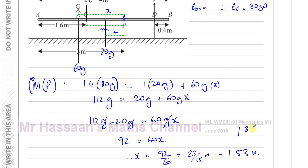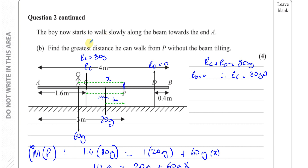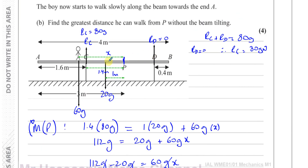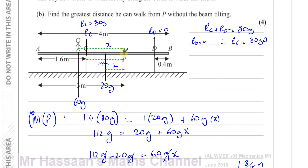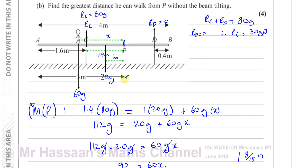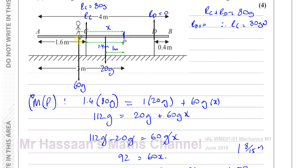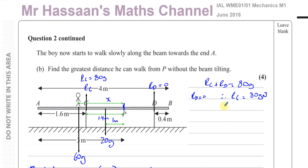So the greatest distance the boy can walk from P toward A without the beam tilting is 23/15 meters, or 1 and 8/15 meters, approximately 1.53 meters. In the other direction toward B, he could only walk 1 meter before reaching the end of the beam, so the limiting constraint in that direction is the beam's length, not tilting.